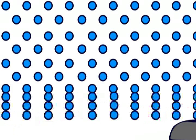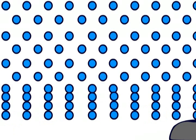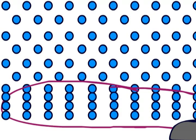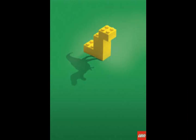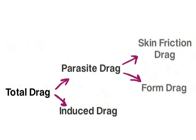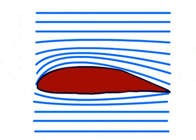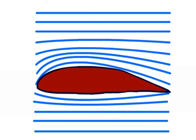Obviously the picture would look like this to start with, but I can't be bothered to animate thousands of particles individually, so you will have to use your imagination a little. Hopefully you get the gist though. Next, form drag. When air flows around an aircraft, it is going to change in speed and direction, and this also requires energy.